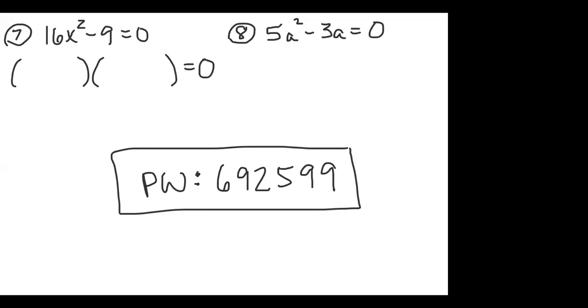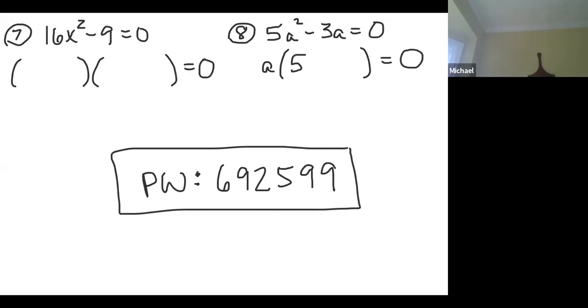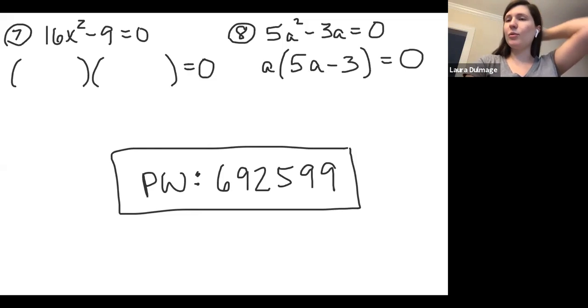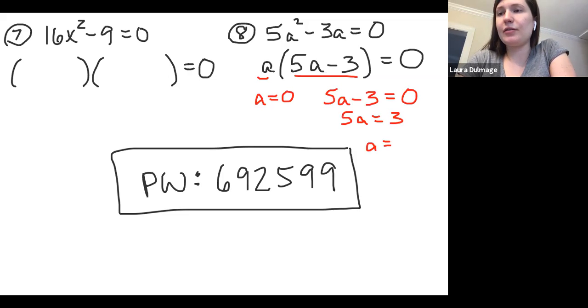Would anyone like to get us started on number eight while we work on seven? GCF an A out of it. Cool. All right. What remains? 5A minus three. Okay. So then we look at what remains. It's a binomial, so it has potential to be a difference of squares. Is it a difference of squares? No. No, it's not. It's just a difference. So we are done factoring with number eight. We have two factors, and they both have A's in them. So they will both provide us solutions. So our first factor is A, so we set that to zero. That's a solution because it's already solved. And then 5A - 3 = 0. We'll add three and divide by five. So the solutions in number eight are 3/5 and zero.